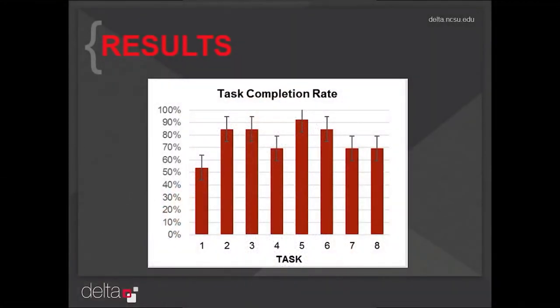Just to give you a quick preview of task completion rate — how many of the 13 actually successfully completed tasks. For something as simple as creating a Moodle space or requesting a space, seven out of 13 were able to do it successfully. That doesn't sound very good. Another three thought they completed it but actually hadn't, and three just gave up. You can see that there were several tasks — like tasks four, seven, and eight — where they also had a good bit of difficulty.